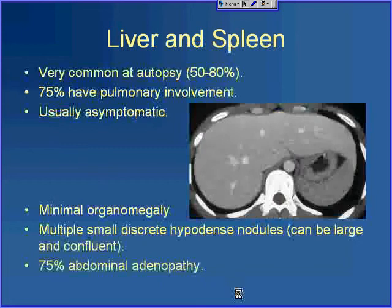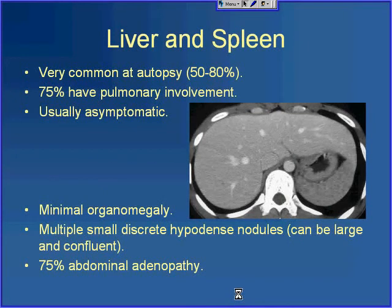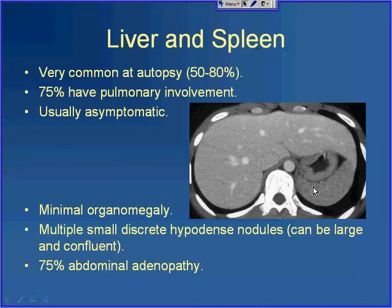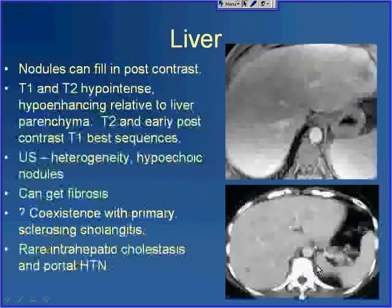Liver and spleen involvement is actually quite common — up to 80% of patients at autopsy will have liver or spleen involvement. Most of these patients will also have lung involvement. We don't image it very often because it's usually asymptomatic. The most common finding is minimal organomegaly, but patients can have multiple small discrete hypodense nodules, as seen here in the spleen. Most of these patients will also have abdominal adenopathy. The nodules can become quite large and confluent, appearing very nonspecific.